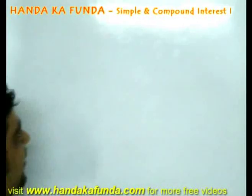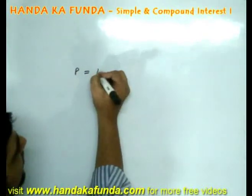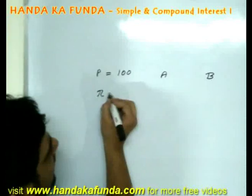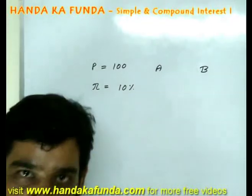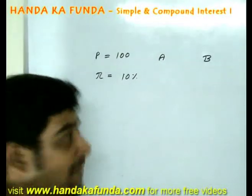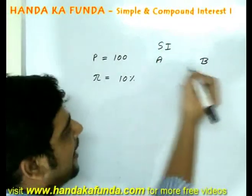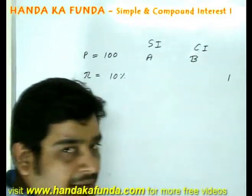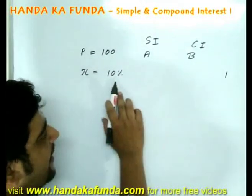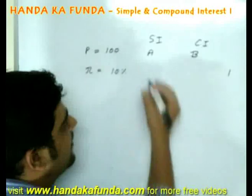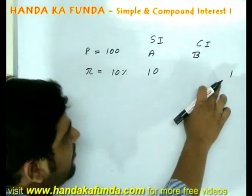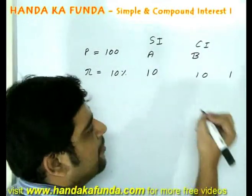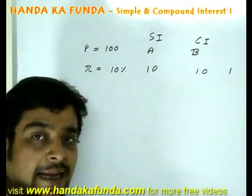Let us take an example. Let us say I loaned 100 rupees to two people, A and B. My rate of interest is 10%, but there is a difference: to A, I am giving at simple interest, and to B, I am giving at compound interest. Simple interest will be 10% on 100 rupees, that is 10 rupees. Compound interest will also be 10% on 100 rupees, that will also be 10 rupees. As you can see, there is no difference here.